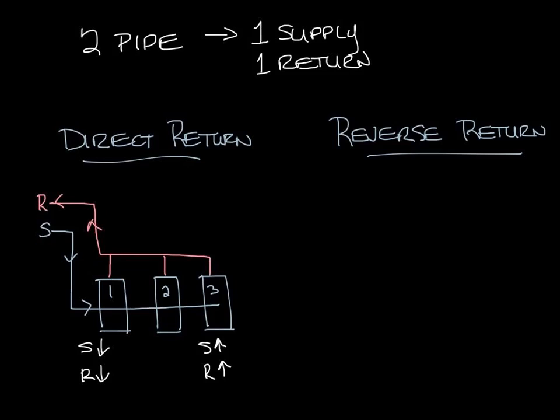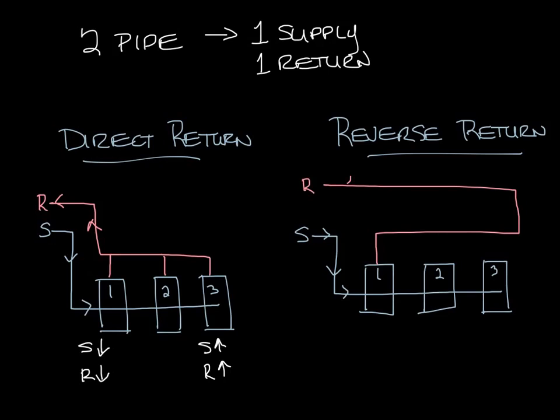In reverse return piping the losses from the supply through the unit and out the return are balanced through the three units. So let's draw our three units again and then let's have our supply that looks the same as it did before coming in through the first unit to the second to the third. But your return looks like this. So the first units return goes the longest, then the second, then the third. So now you can see that the first unit has the shortest supply path but the longest return path. And the last unit has the longest supply path but the shortest return path.